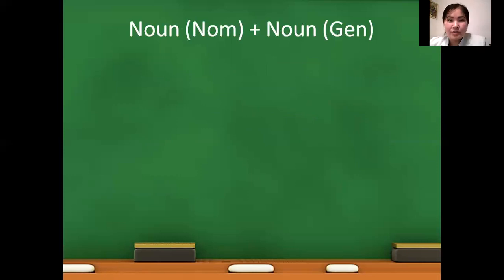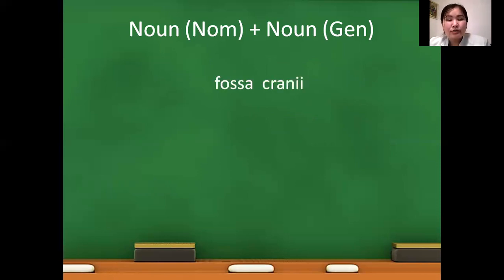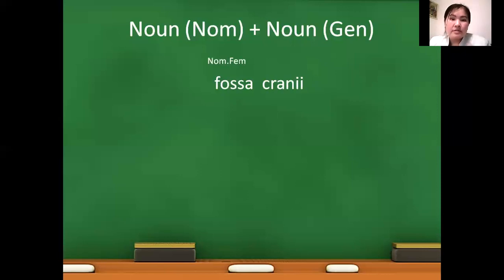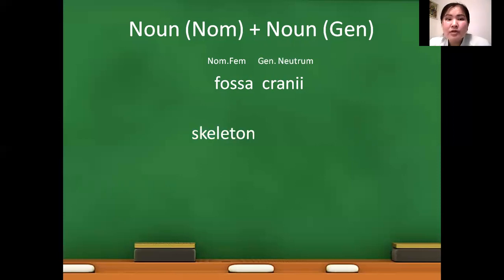In noun plus noun structure, the first noun is used in nominativus and the second, describing noun is used in genitivus form. For example, fossa cranii — fossa is nominativus femininum, and cranii is genitivus neutrum form. As you can see, these nouns are not matching in gender, neither in case.